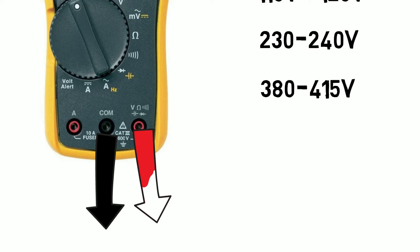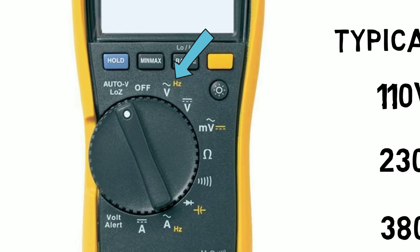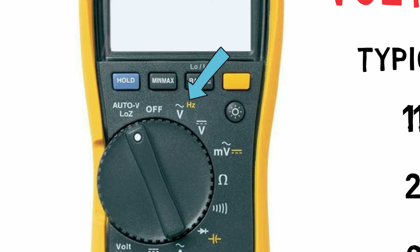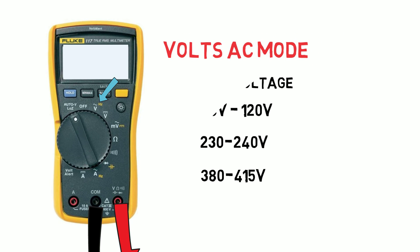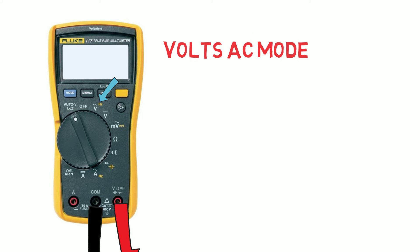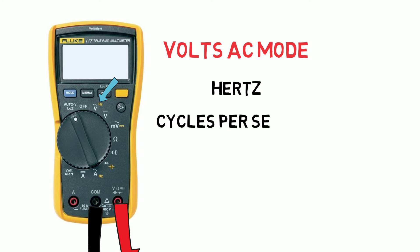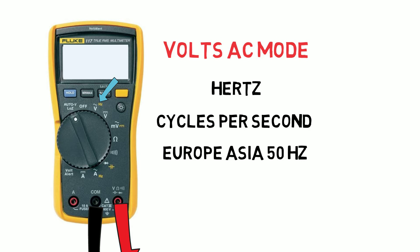Our probes connect between whatever two conductors we are checking voltage between. In single phase applications this is usually between live and neutral, and in three phase applications we will be measuring between the phases or phase to neutral or earth. If we press the yellow function button while measuring an AC voltage we will be able to determine its frequency measured in hertz. A hertz is how many times a second the alternating current voltage cycles. Typical power supplies in the UK, Europe and most of Asia are 50 hertz, whereas voltages in the US are usually 60 hertz.